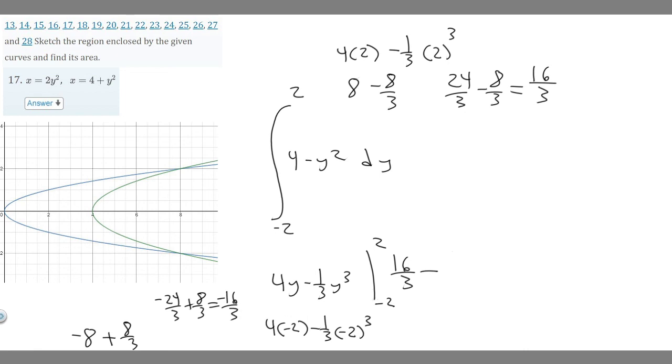We have 16/3 - (-16/3). The two negatives cancel, so we have 16/3 + 16/3 = 32/3. That's our final answer: 32/3.